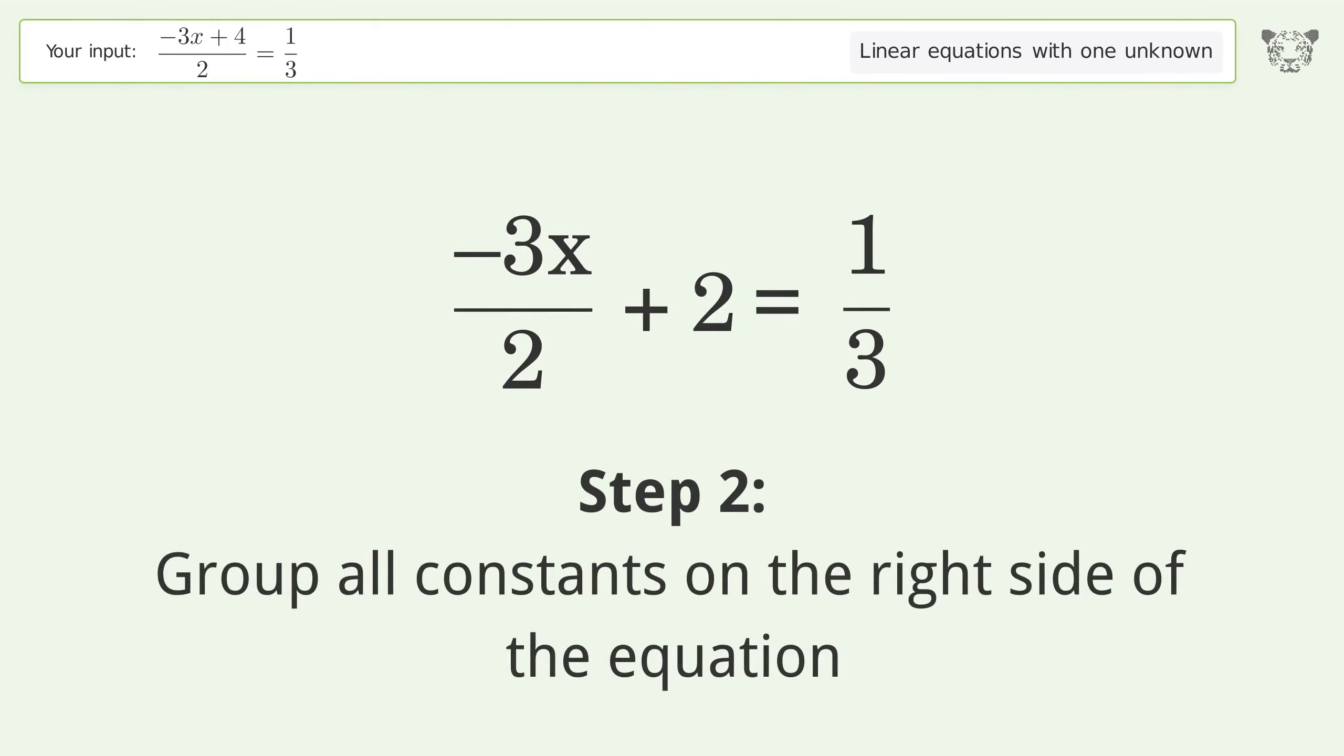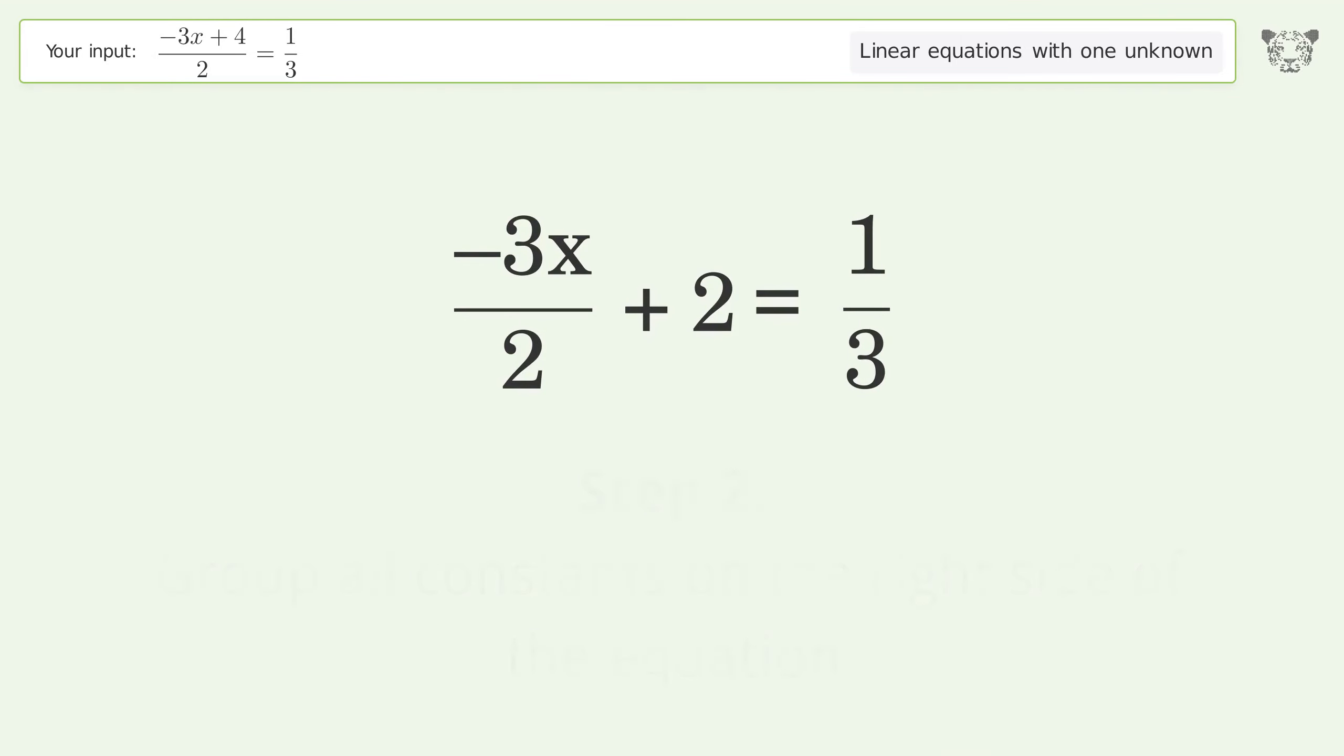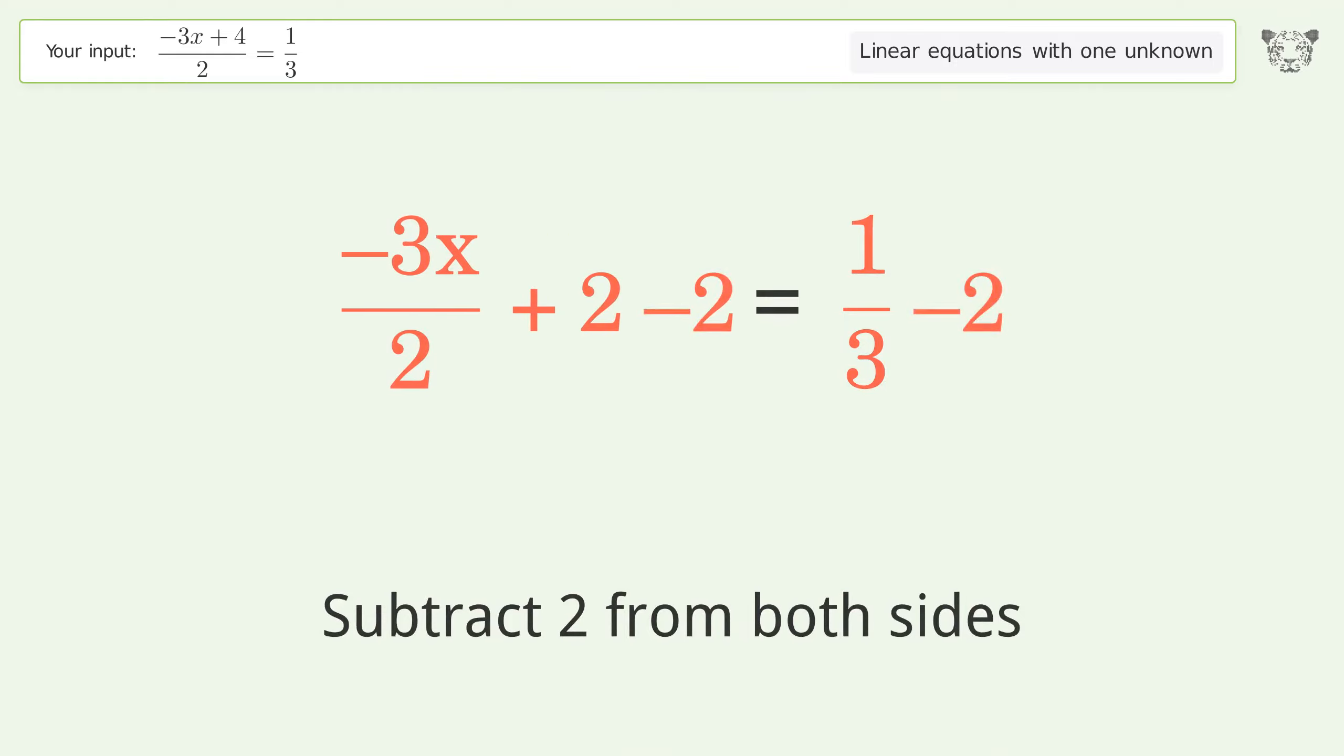Group all constants on the right side of the equation. Subtract 2 from both sides. Simplify the arithmetic.